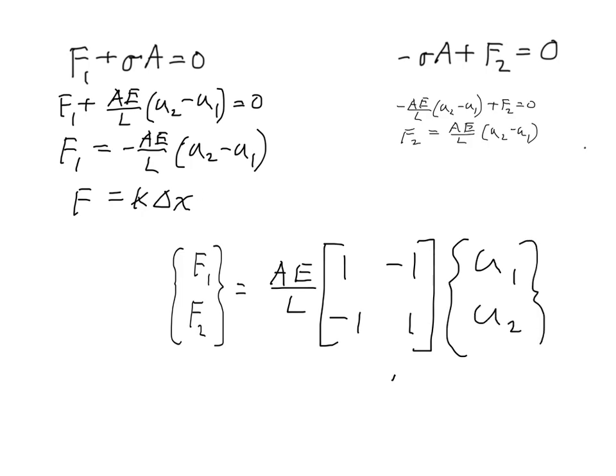And what we've done, then, is write our first finite element equation. Formal finite element equation is a force vector is equal to a stiffness matrix times a displacement vector. So that's how FEA gets formulated.